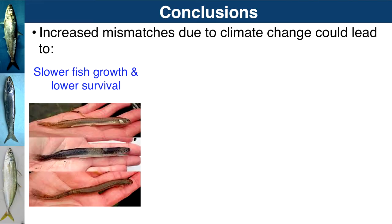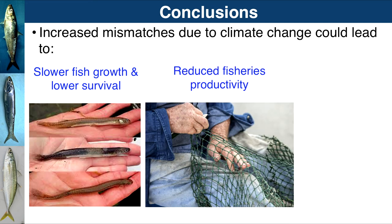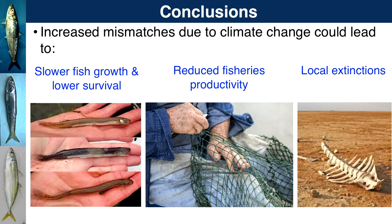These mismatches have impacts in terms of lower fish survival and growth, reduced fisheries production — which then affects humans through availability of fish as a protein source. And in some instances, phenological mismatches could lead to local extinctions, which is an obvious concern for conservationists. With that, I will conclude — thank you very much.